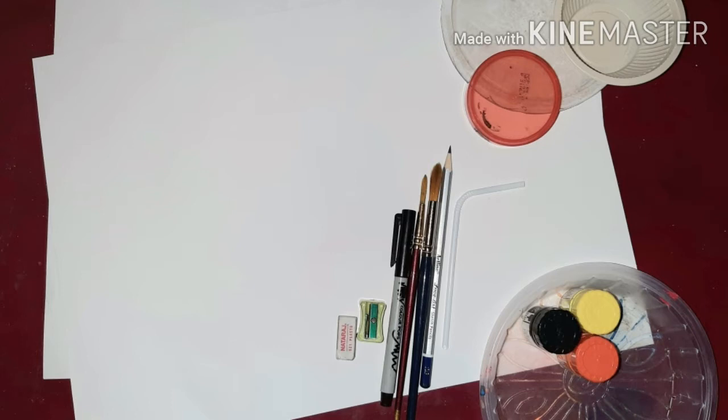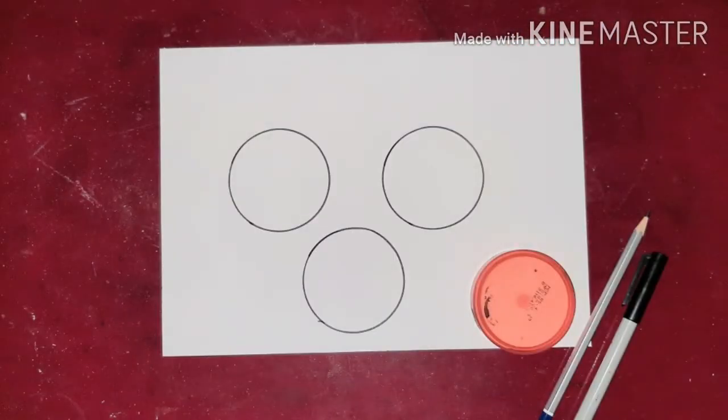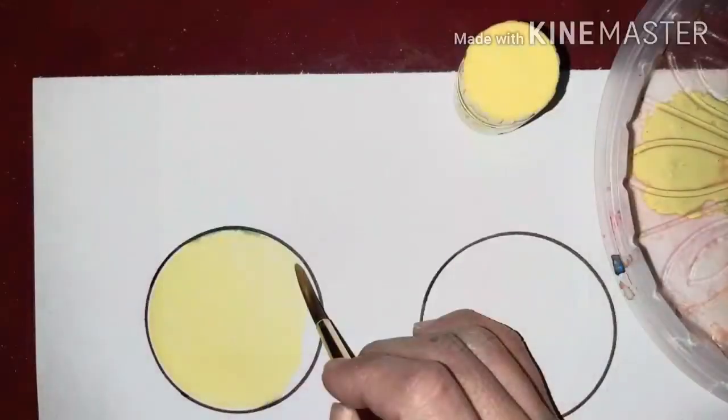A plastic straw and brush number 10 and 12 for painting. Draw three medium size circles for painting colors and paint the first circle with light yellow by adding more water and less color in it.